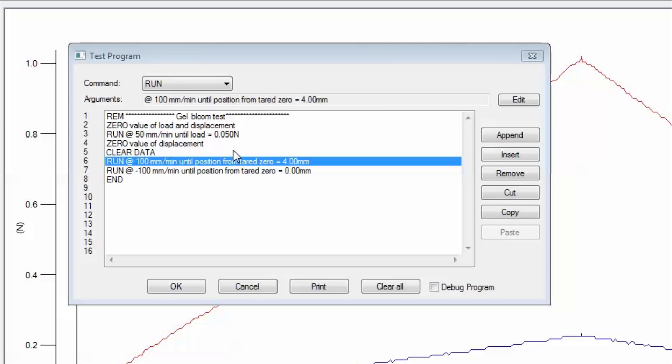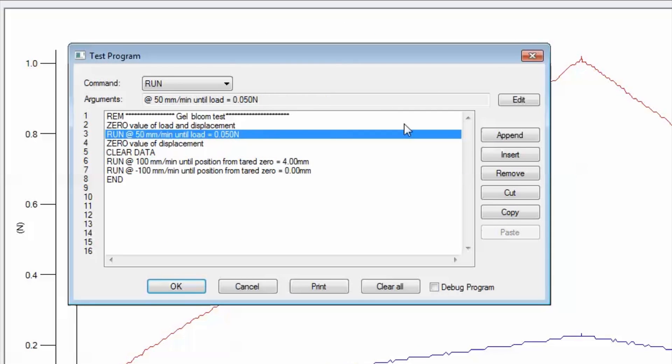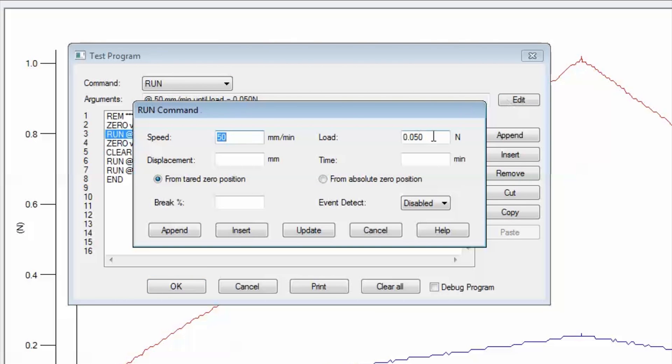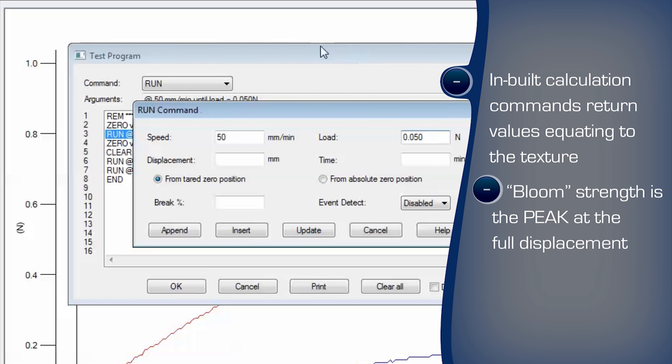A suitably rated load cell is selected to maximize measurement accuracy. The automated test program is easily written with the familiar Windows-based environment. Commands are selected to perform each of the steps. The gel strength is calculated from the peak force, represented in grams.